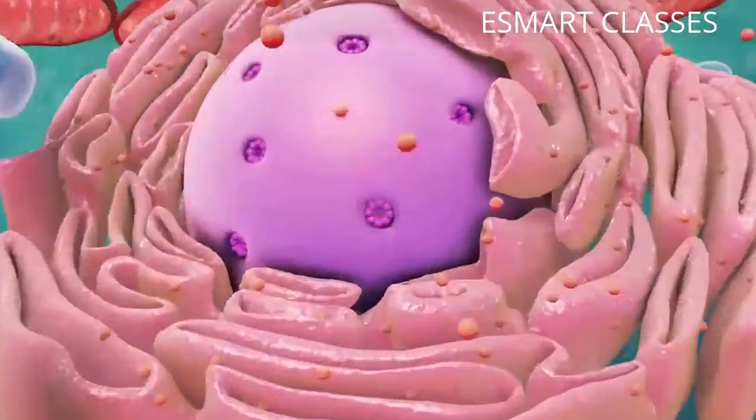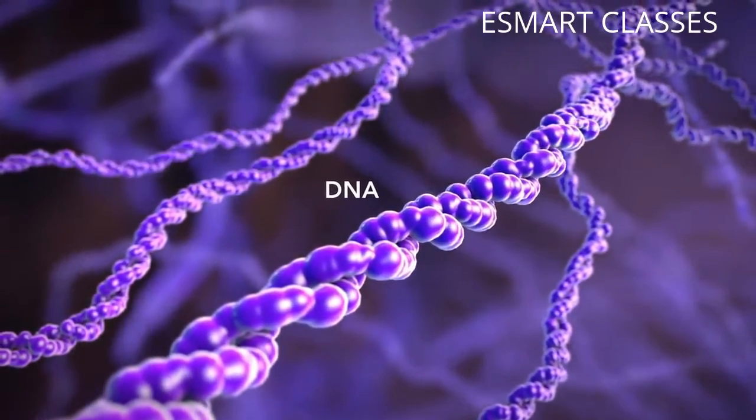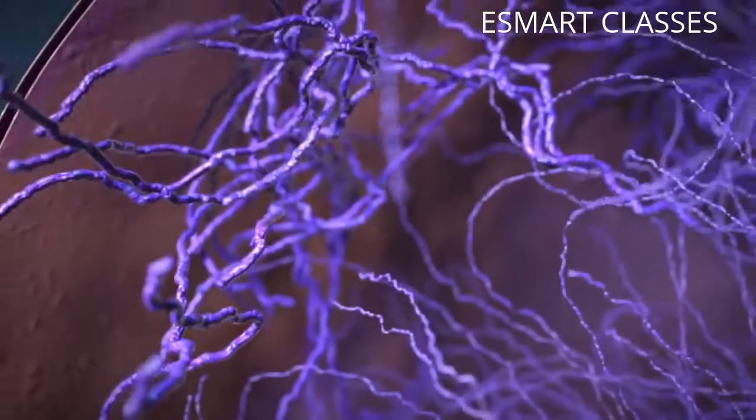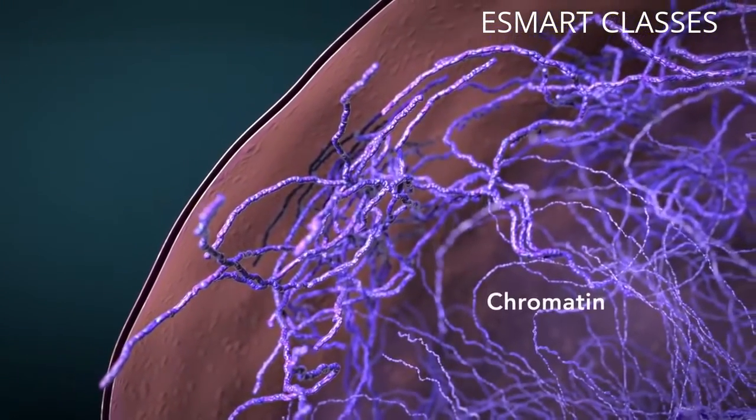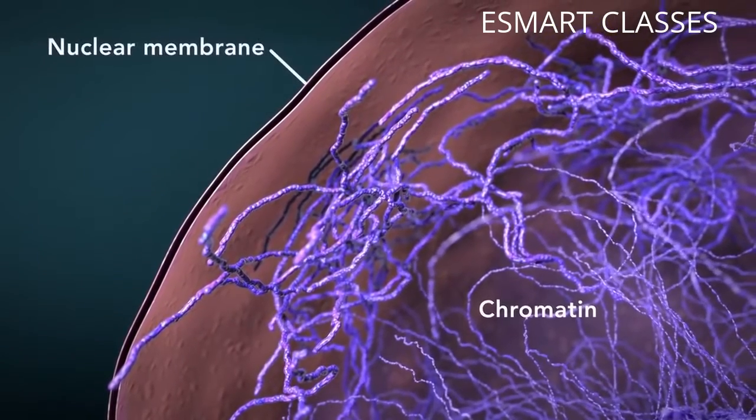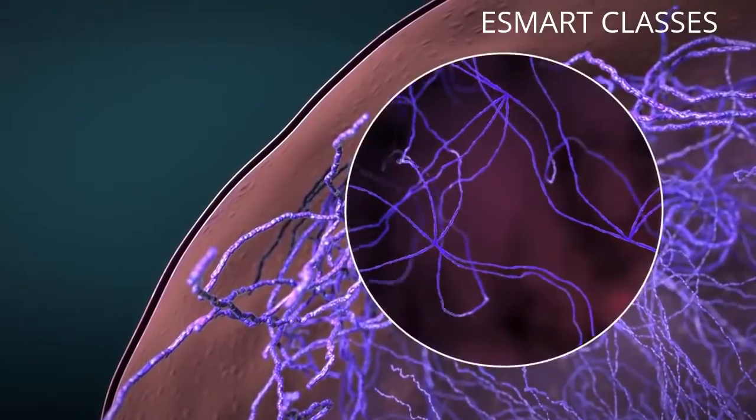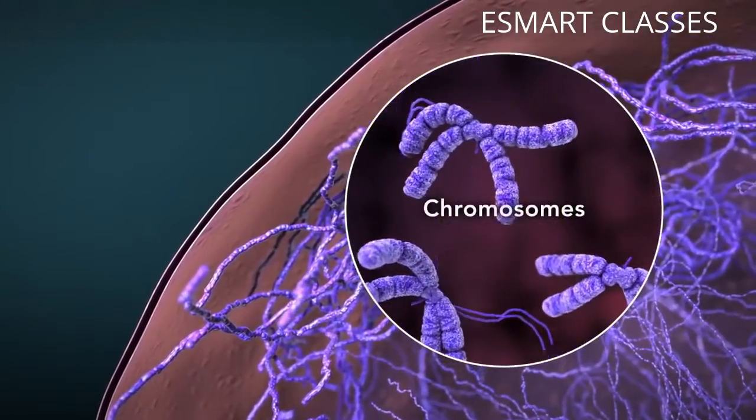The nucleus contains DNA or genetic material. DNA dictates what the cell is going to do and how it's going to do it. Chromatin is the tangled spread out form of DNA found inside the nuclear membrane. When a cell is ready to divide, DNA condenses into structures known as chromosomes.